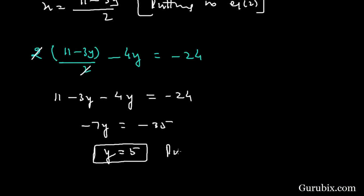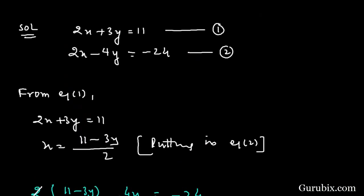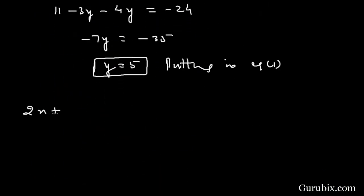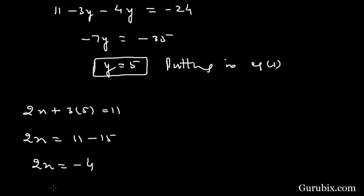Now we put y equals to 5 back into equation number 1 to find x. Equation number 1 is 2x plus 3y equals to 11, so 2x plus 3 times 5 equals to 11. This means 2x equals to 11 minus 15, so 2x equals to minus 4, therefore x equals to minus 2.